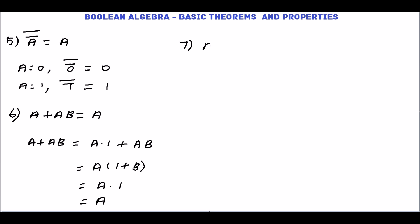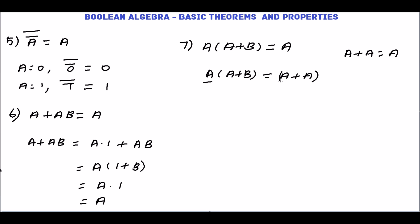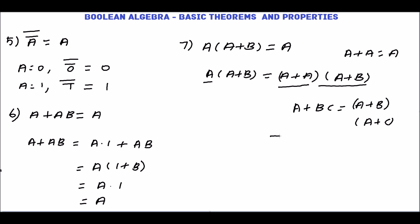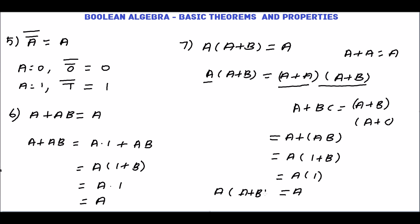The next theorem is a · (a + b) = a. Taking the left-hand side a · (a + b), since a + a = a we can write a as a + a, so a + a · (a + b). By the distributive law, a + bc = (a + b)(a + c), so we write this as (a + a)(a + b) = a · (a + b). Factoring out a: a · (1 + b) = a · 1 = a. So a · (a + b) = a.